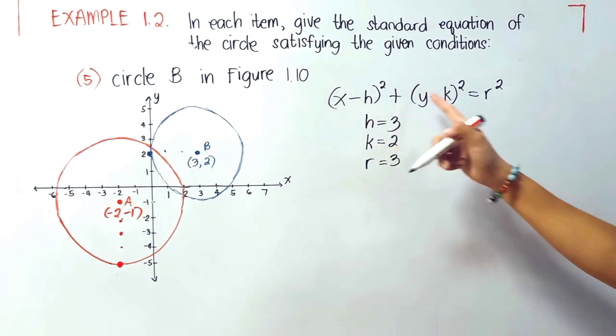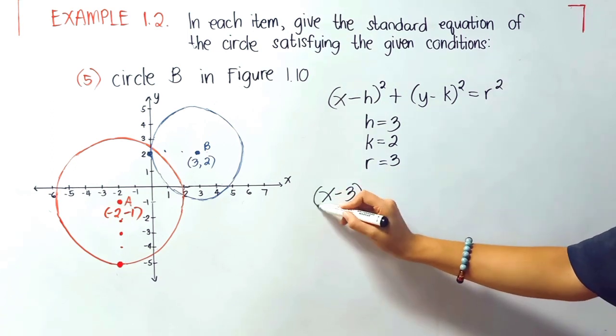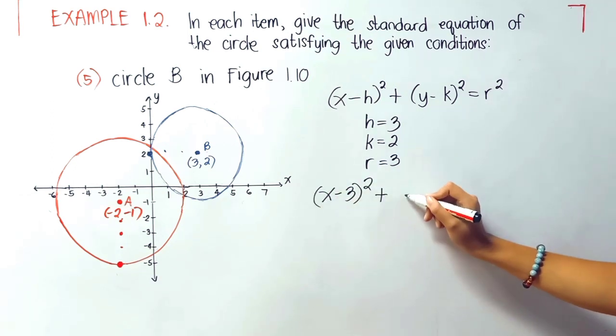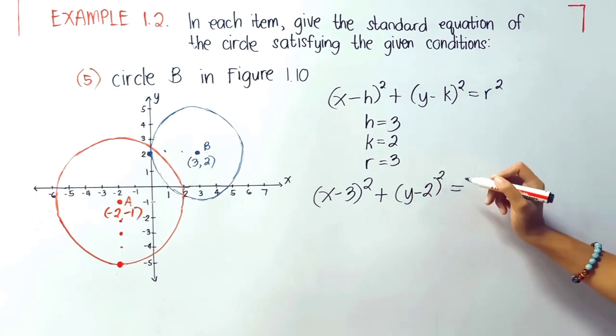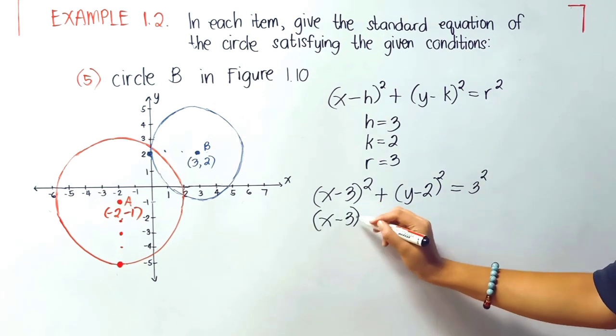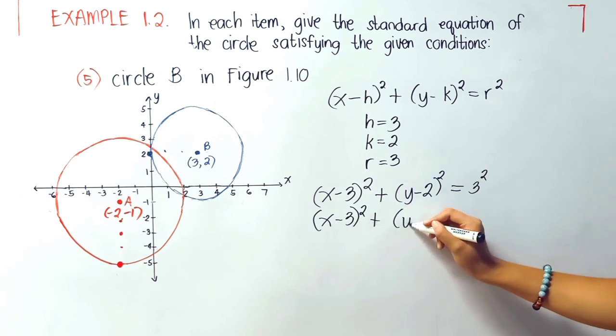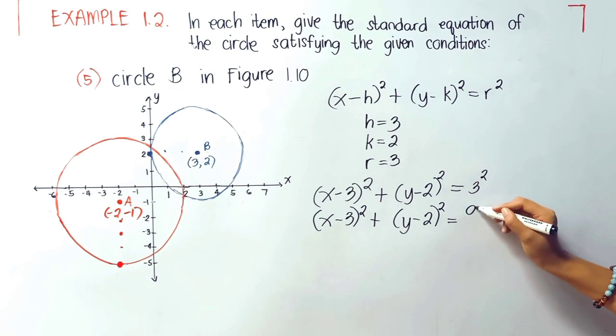We are now ready to substitute x minus our h is 3 quantity squared plus y minus our k is 2 quantity squared equals 3 squared. Now we'll just rewrite this one: x minus 3 quantity squared plus y minus 2 quantity squared equals 9. So this is our final answer.